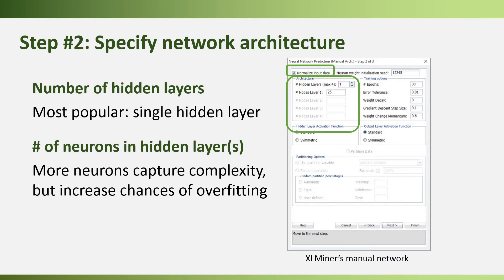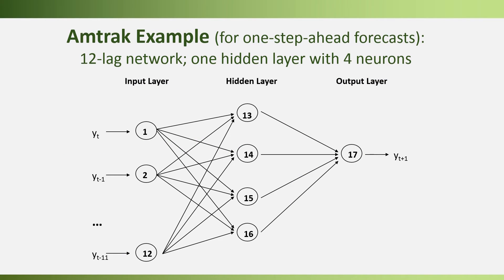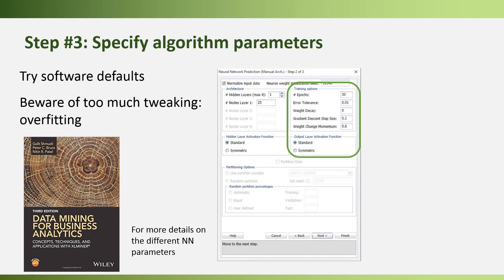The next step is specifying the architecture or structure of our network — how many hidden layers we want and how many neurons to include in each layer. More layers and neurons capture more complex relationships, but you're more likely to overfit. In XLMiner, you can choose one or more hidden layers and specify the number of hidden neurons per layer. For our example, we'll fit a model with a single hidden layer with four neurons, 12 lag inputs, and a single output.